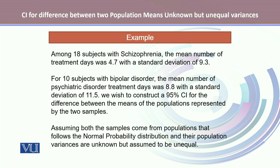The other group contained 10 subjects with bipolar disorder with a mean number of psychiatric disorder treatment days of 8.8 days and a standard deviation of 11.5 days. We wish to construct the 95% confidence interval, assuming both samples come from populations that follow the normal distribution and their population variances are unknown but assumed to be unequal.